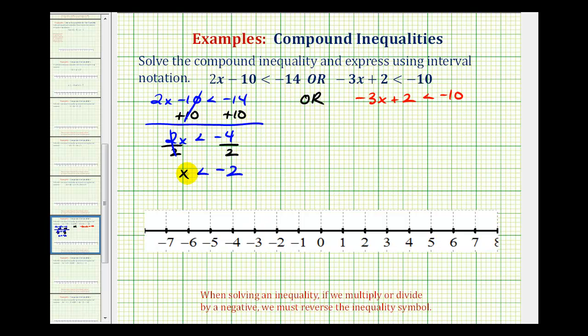Again, since negative 2 does not satisfy this inequality, it's not in the interval. So we make an open point at negative 2. And then for numbers less than negative 2, we have an arrow to the left.